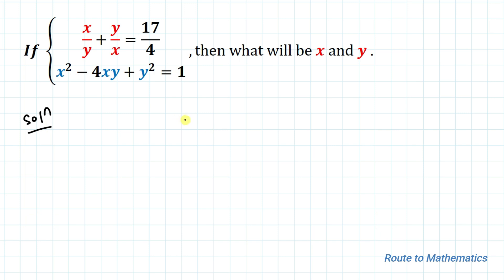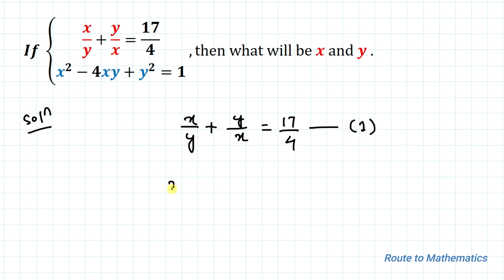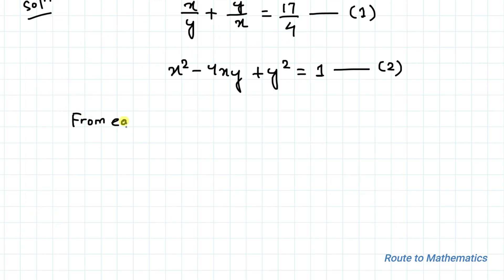We have x/y + y/x = 17/4 — let's take it as equation 1. And x² - 4xy + y² = 1 — let's take it as equation 2. Now from equation 1 we have x/y + y/x = 17/4.